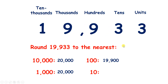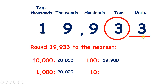And now rounding to the nearest 10, find the place, look next door — it's 4 or less, so we're going to let our 10s column rest, and change that units column to a 0, so we have 19,930.